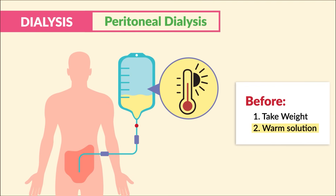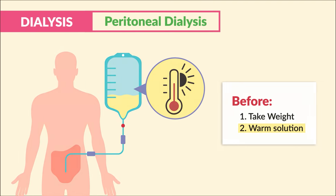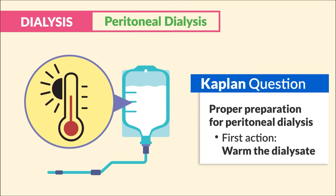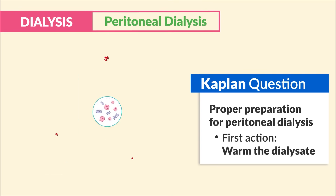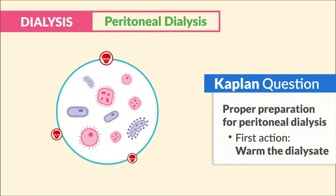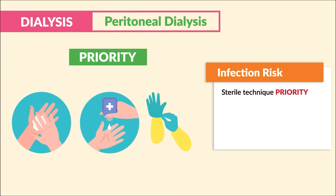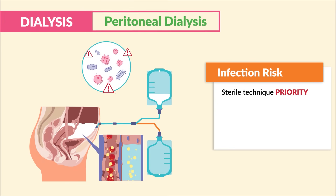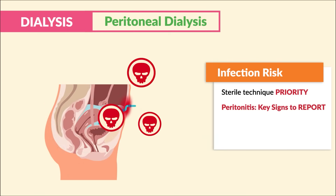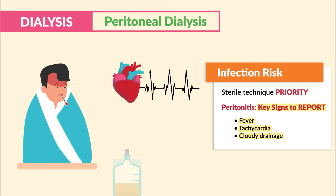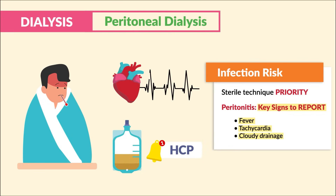As a general rule, any fluid going inside the body, we want to make sure it's warm. The big key point in this section is the deadly complication of infection. Write this down: infection risk. We must use sterile technique as priority when spiking and attaching the bag of dialysate. A small infection can lead to a very deadly infection in the peritoneal cavity — this is known as peritonitis. The key signs to report are fever, tachycardia, and cloudy drainage — report to the HCP immediately.